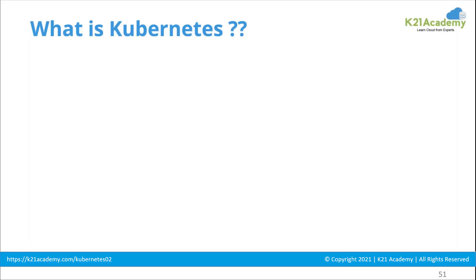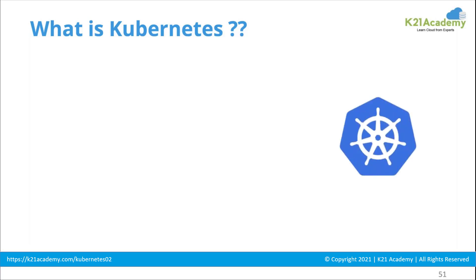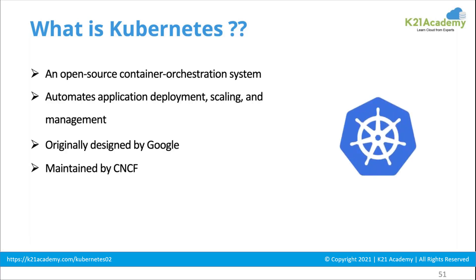Kubernetes helps us manage the complete lifecycle. If I have five or ten containers, it's much easier to manage on a single host. But in production, I'll never have just a single machine — I'd have a lot of machines together. If containers are running on all the machines, there could be 1,000 containers, and someone has to manage them. That is the management layer.